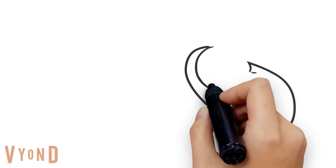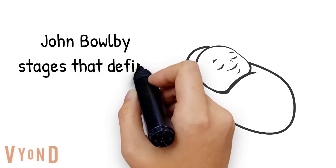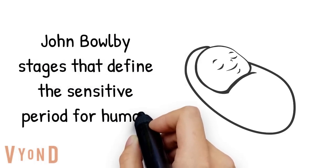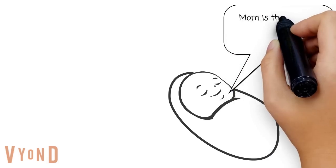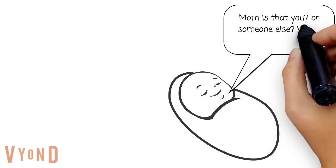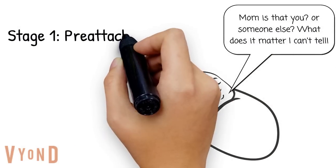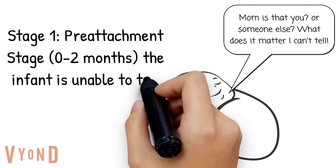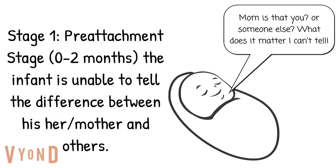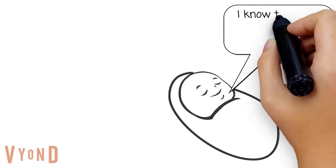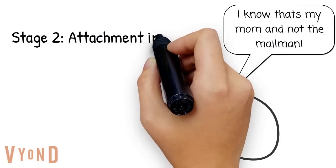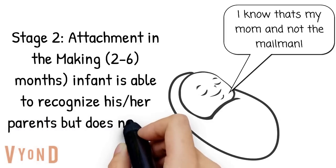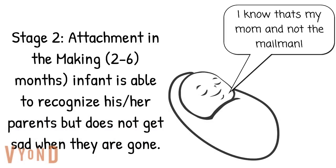John Bowlby adapted Lorenz's work, coming up with a theory for the stages of human interactions with parents or primary caregivers. Stage one is the pre-attachment stage, usually occurring from zero to two months, where the infant is unable to tell the difference between his or her mother and other humans. Stage two is attachment in the making, usually occurring between two and six months, when the infant can recognize who their parents are but does not get upset when they are gone.